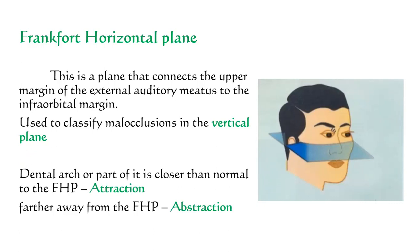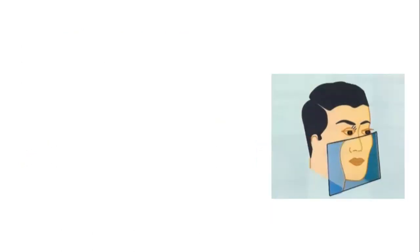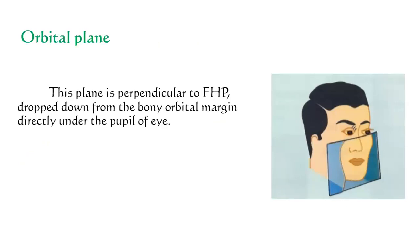When the dental arch or part of it is closer than normal to the Frankfurt horizontal plane, it is called attraction. When the dental arch or part of it is farther away from the Frankfurt horizontal plane, it is called abstraction. The orbital plane is perpendicular to the Frankfurt horizontal plane and is dropped from the bony orbital margin directly under the pupil of the eye.